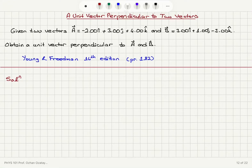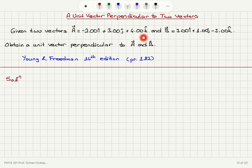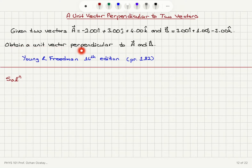A unit vector perpendicular to two vectors. Given two vectors: vector a equals minus 2i-hat plus 3j-hat plus 4k-hat, and vector b equals 3i-hat plus 1j-hat minus 3k-hat. Obtain a unit vector perpendicular to a and b.